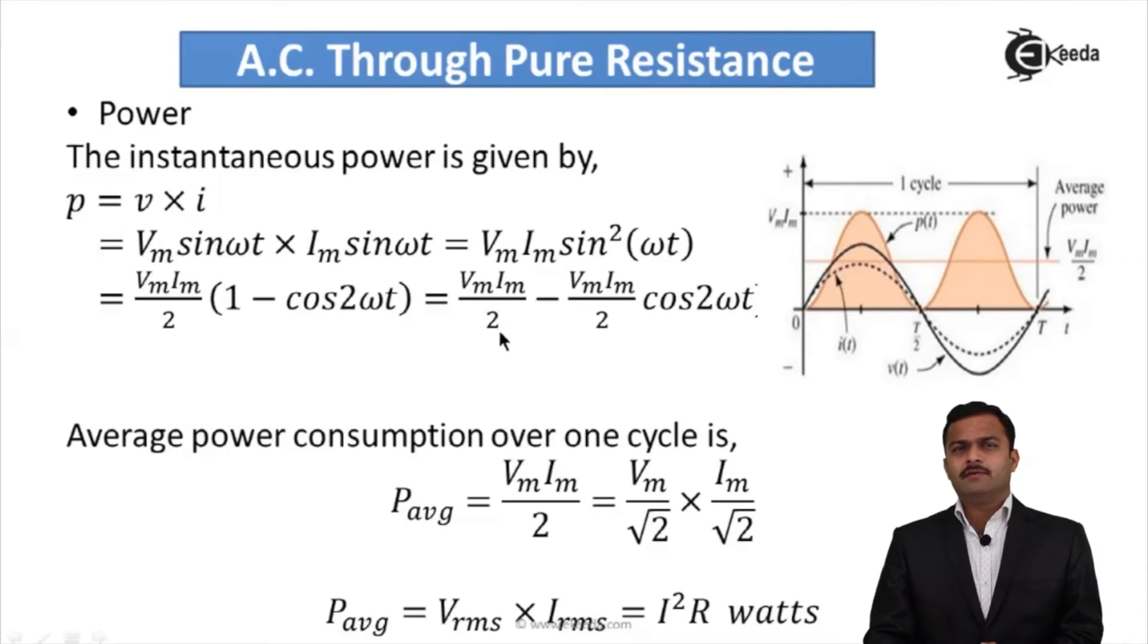One component is VmIm/2, and another component is VmIm/2 cos(2ωt). If you closely observe, out of these two components, one is DC with a fixed value VmIm/2, and another is sinusoidal. The sinusoid has shifted by some amount, and that shift is VmIm/2.